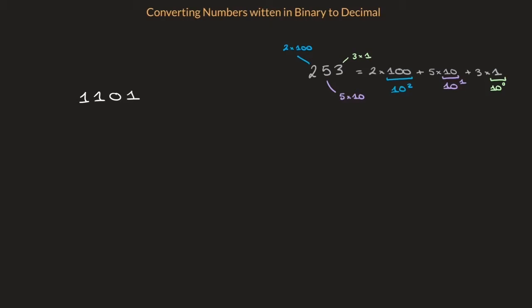So, working my way from right to left, this first digit, 1, refers to 1 times 2 raised to the power of 0. The second digit we have here, the 0, means 0 times 2 raised to the power of 1.